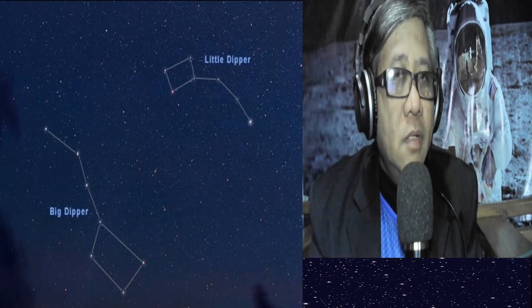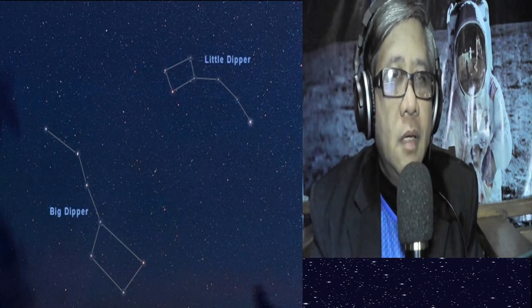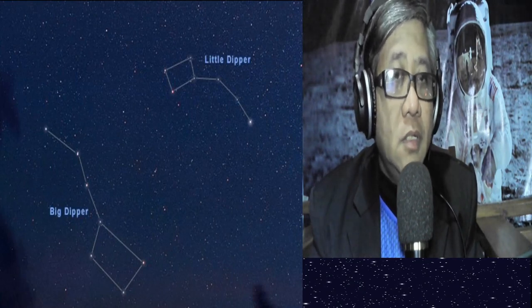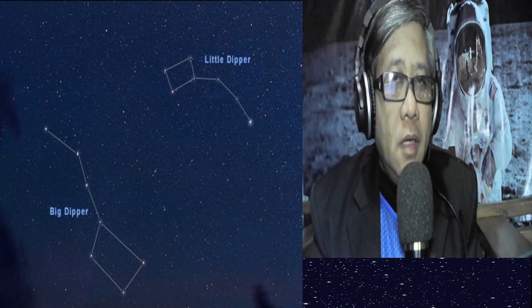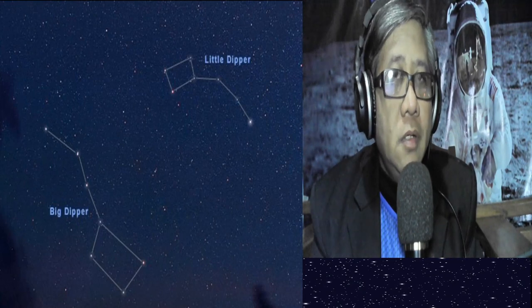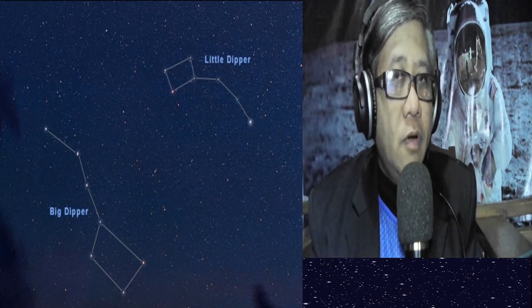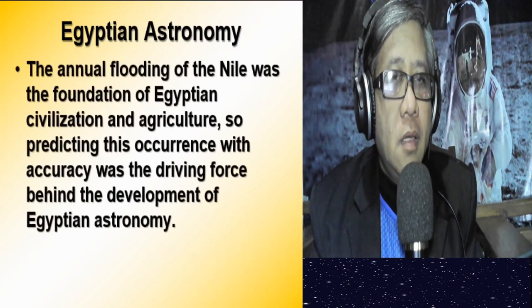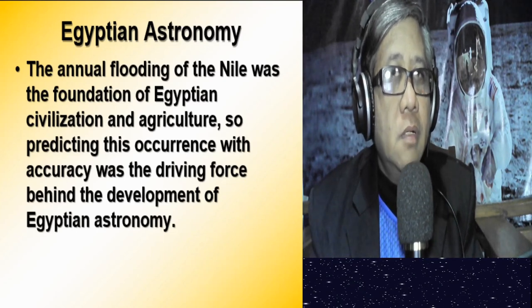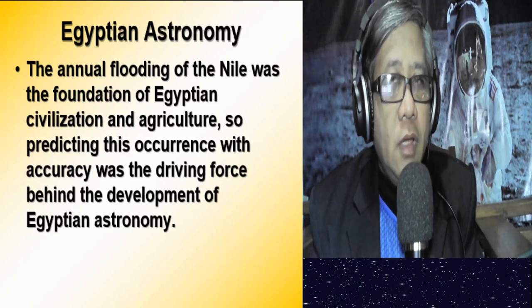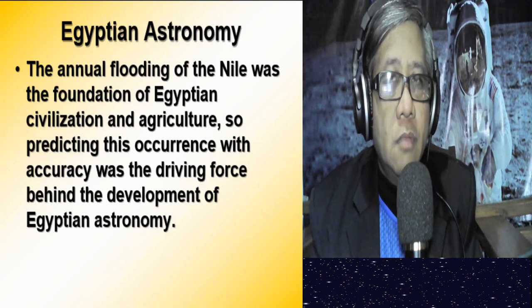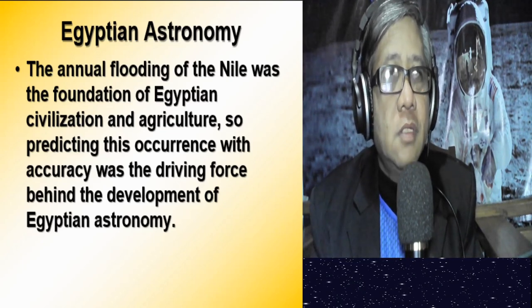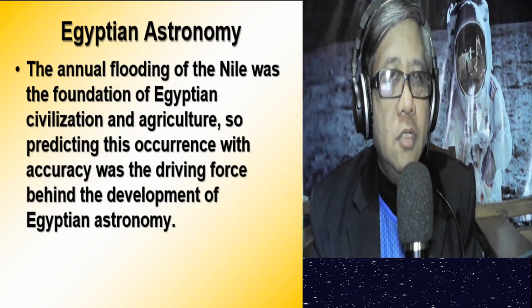The Egyptian civilization is anchored on agriculture — agriculture was the foundation of ancient Egyptian civilization. Water is vital, and the source of water for agriculture is the Nile River. The Nile River is affected by lunar tides, and at times flooding occurs. It was important for Egyptian farmers to predict the occurrence of flooding along the Nile. The annual flooding of the Nile was the foundation of Egyptian civilization and agriculture, and predicting it with accuracy became the driving force behind the development of Egyptian astronomy.